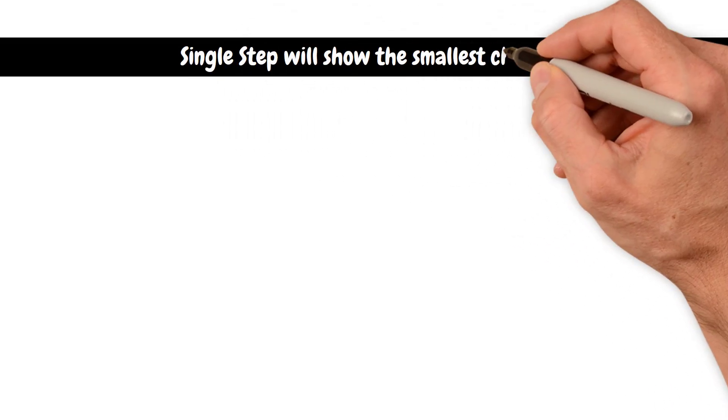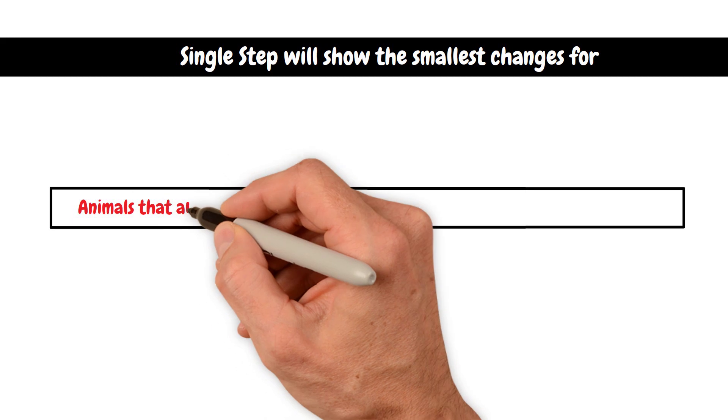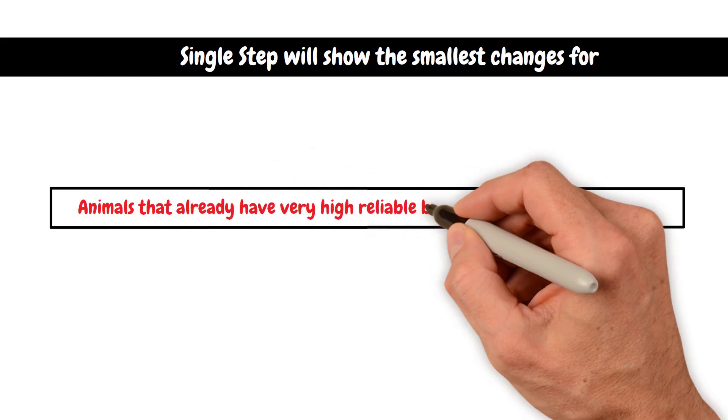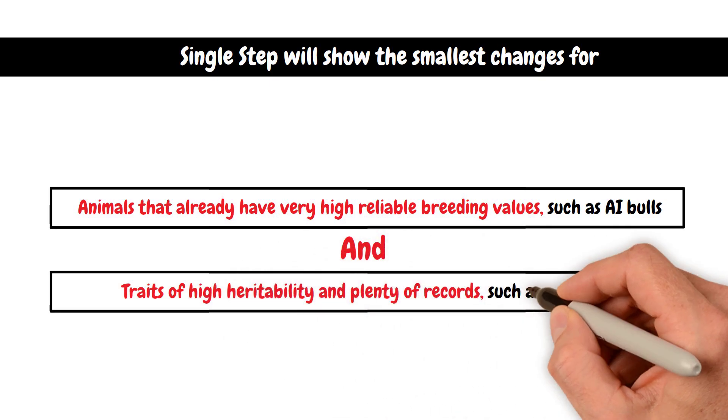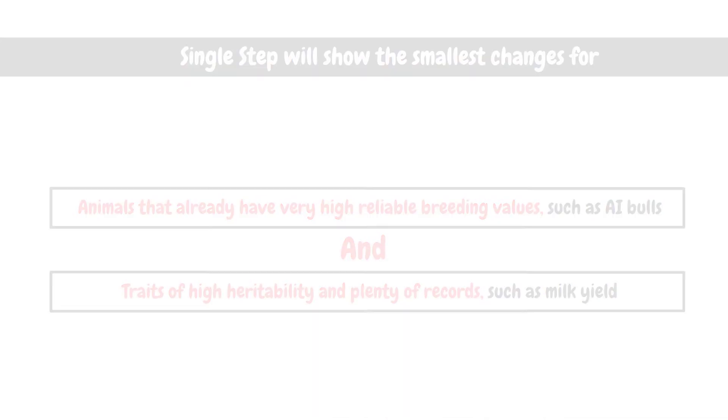Single-step will show the smallest changes for animals that already have very high reliable breeding values, such as AI bulls, and traits of high heritability and plenty of records, such as milk yield.